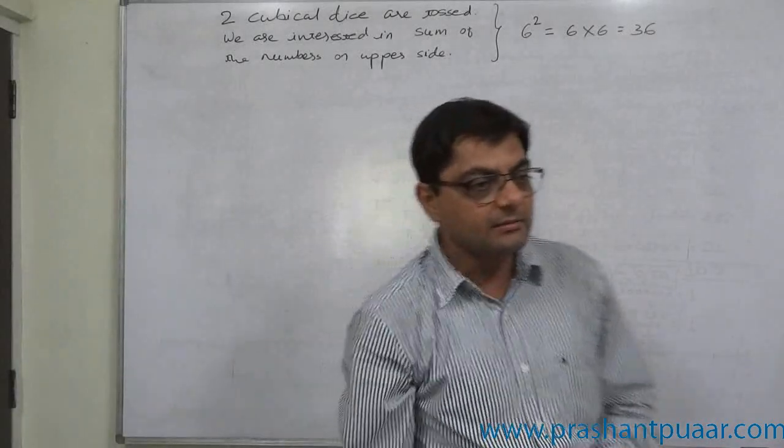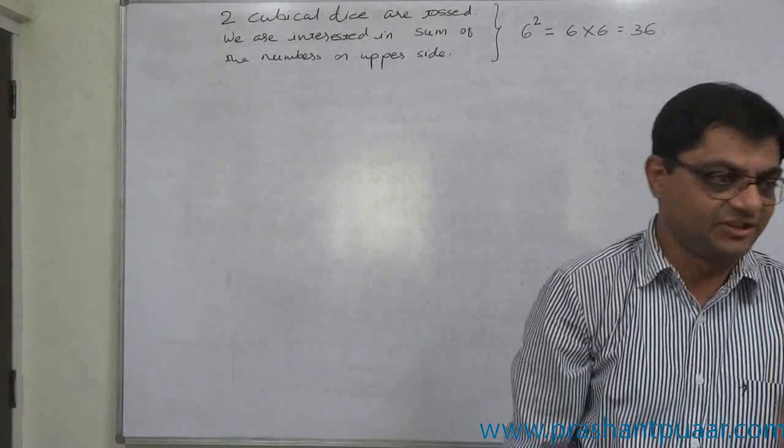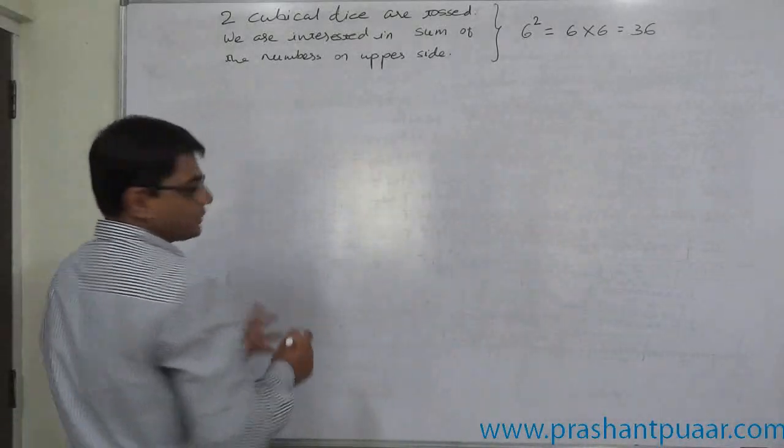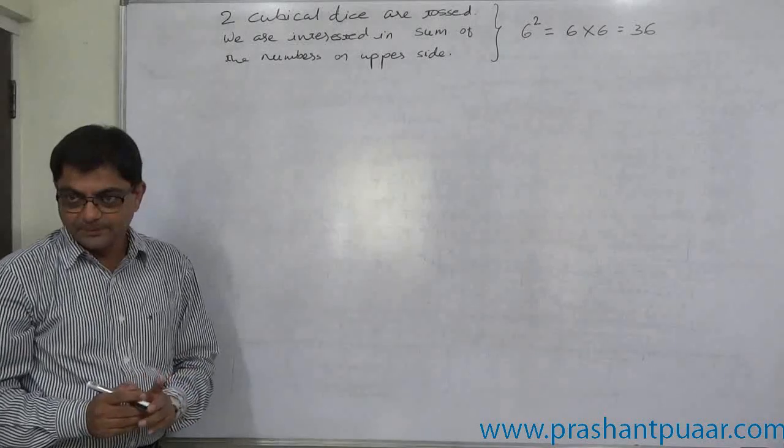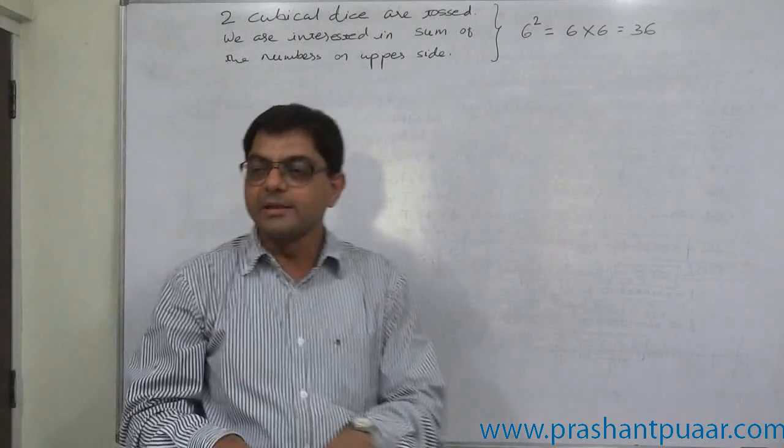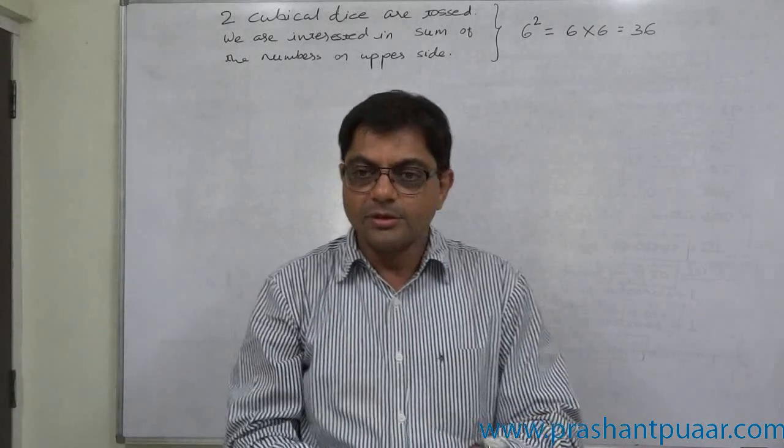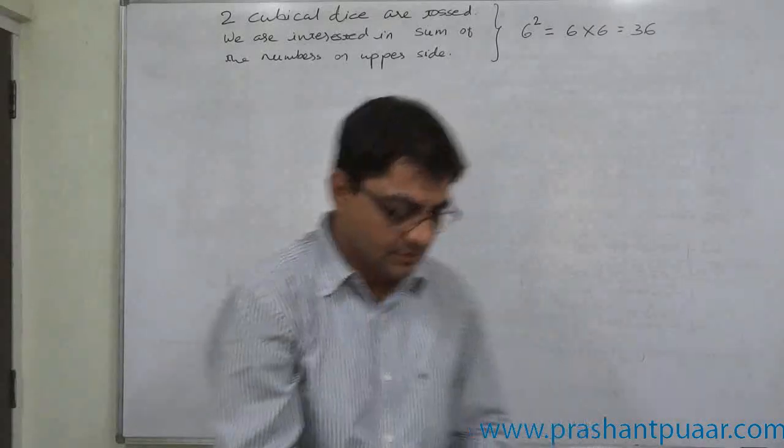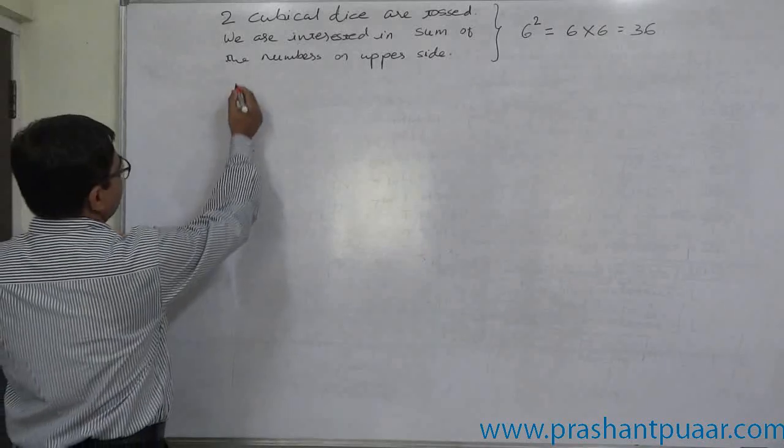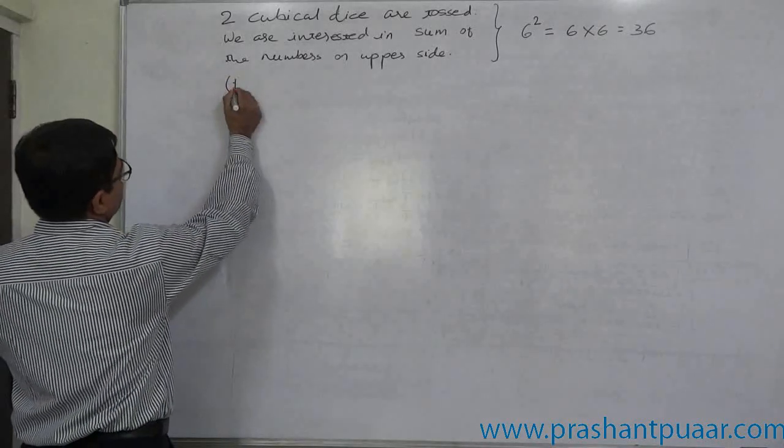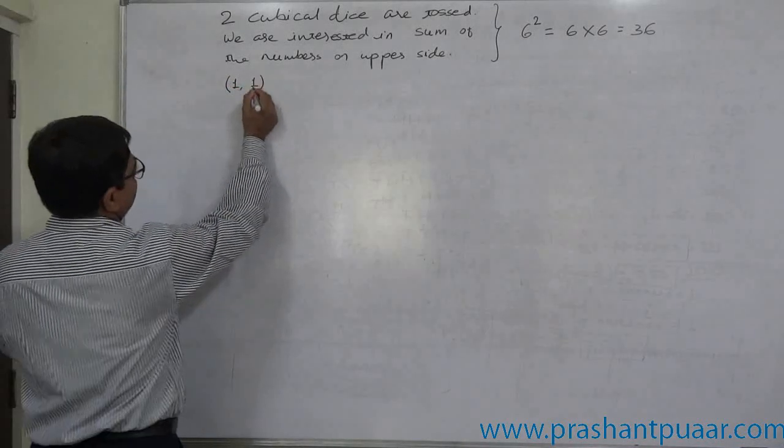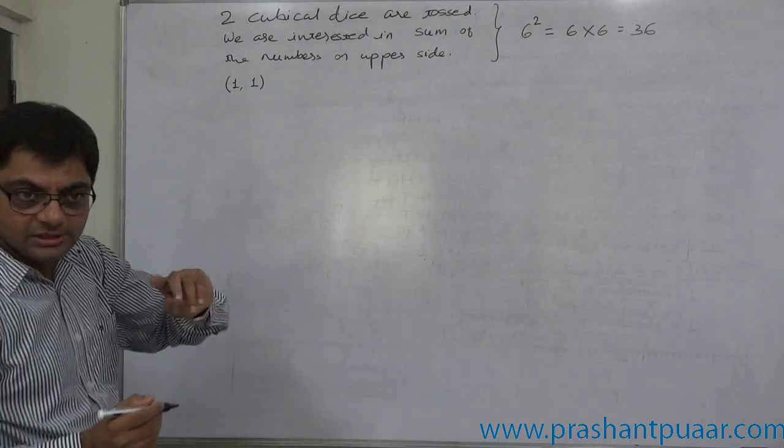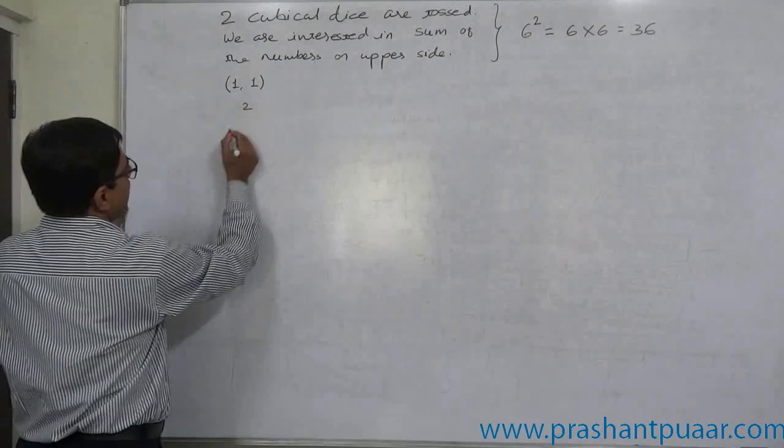Now, we are interested in which 36? Let us prepare a list of 36 outcomes. To prepare the list, we assume that the left-hand side die remains constant for some time. Say, on the first die, one, and on second die, on left die one, on right die one. Summation is two.